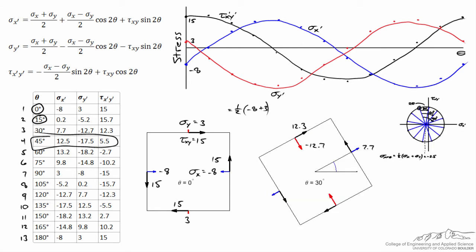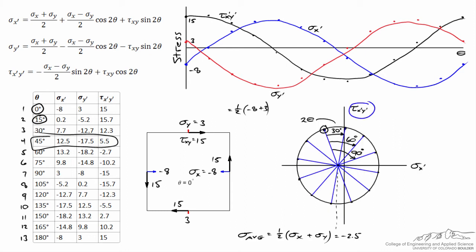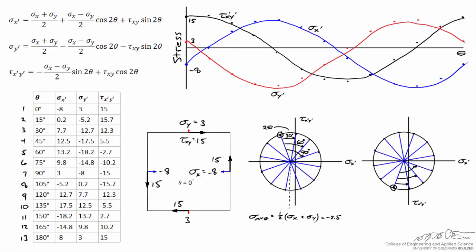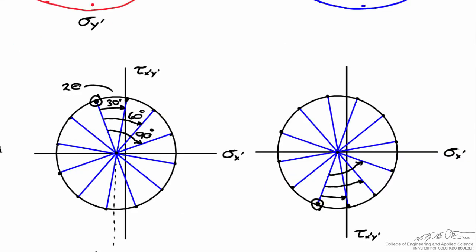The convention we use is that a positive value of theta — for example theta equal to 30 degrees — represents a counterclockwise rotation of the differential element. So a clockwise rotation on Mohr's circle is equated to a counterclockwise rotation of the differential element. Because of this, you'll often see the positive direction of tau x prime y prime plotted downward. If I do that, my circle becomes a mirror image about the horizontal axis, so a counterclockwise rotation on Mohr's circle corresponds to a counterclockwise rotation of the differential element.